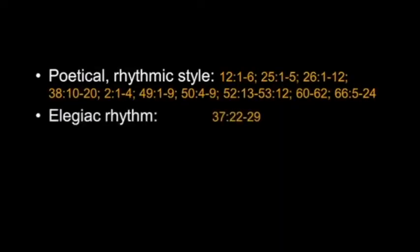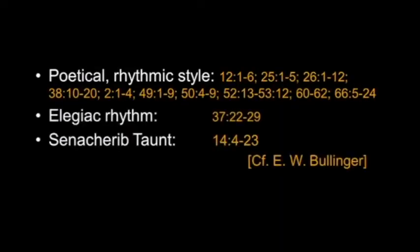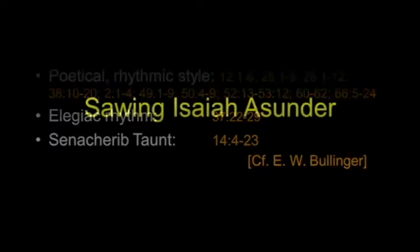We'll also discover another form of something you would consider an encryption — equidistant letter sequences. You'll be startled with what is encrypted in Isaiah 53 when we get to the centerpiece of the third section of the book. It's poetical, with rhythmic style, and the rhythms and stylings are well identified and noted in your notes.